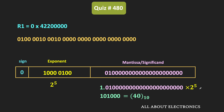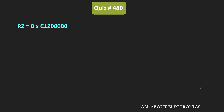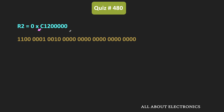So the number stored in register R1 corresponds to plus 40. Similarly, let us find the equivalent decimal value for register R2. This is the value of register R2 in hexadecimal form. Converting it to binary: C in binary corresponds to 1100, 1 in hexadecimal corresponds to 0001 in binary, and 2 corresponds to 0010. All the remaining zeros can be written accordingly — this is the equivalent binary value corresponding to the given hexadecimal number.